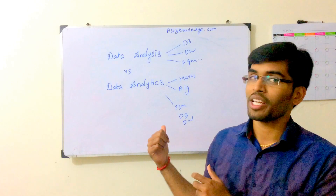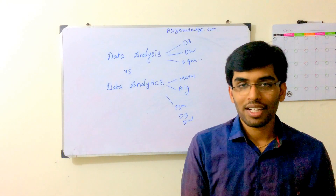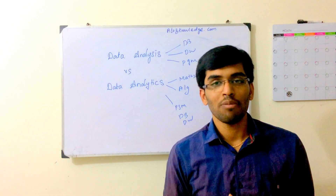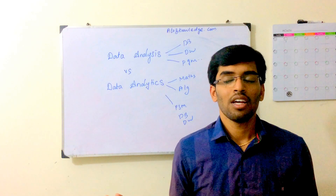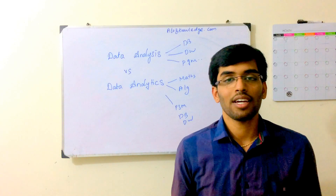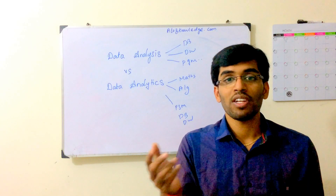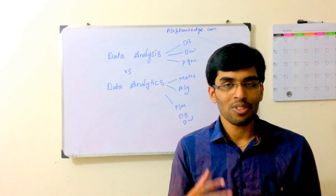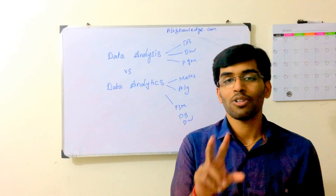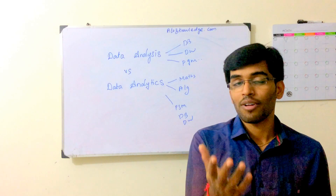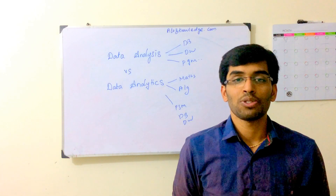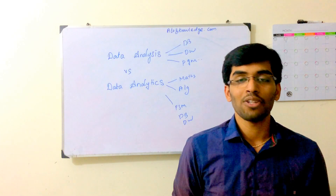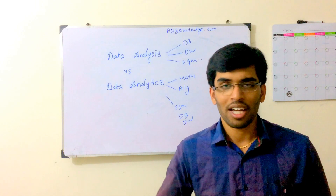If you want to be a data scientist, you need to be very strong in mathematics and algorithms — that is very, very important. Many people tell me they are data scientists because they work with visualization tools. But knowing some visualization tools makes you only about 20% of a data scientist. You need to be very, very good in algorithms and mathematics first; then comes programming language and everything else.